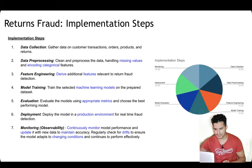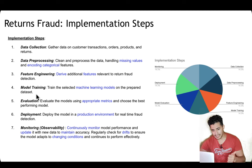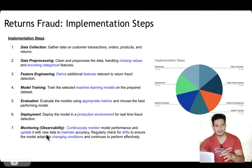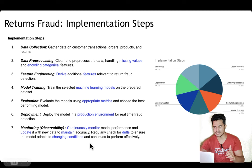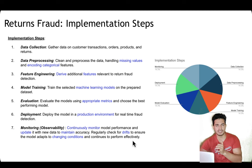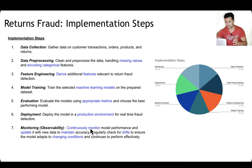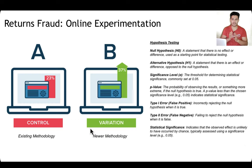The overall model building process is: data collection, data preprocessing, feature engineering, model training, evaluation on metrics, deployment to production, and continuous monitoring — also called observability. This ensures there is no drift over time: we check for feature drift, target variable drift, and changes in customer behavior so the model adapts to changing conditions and continues to perform effectively.